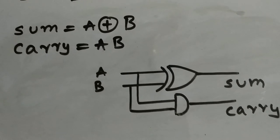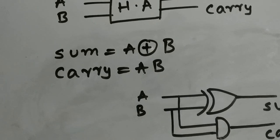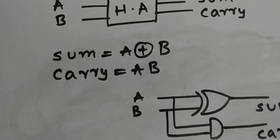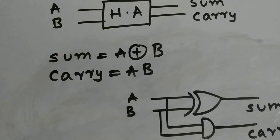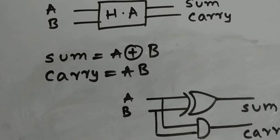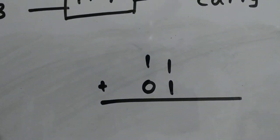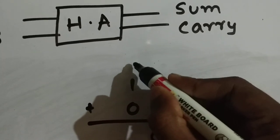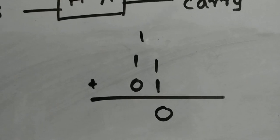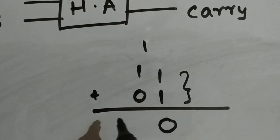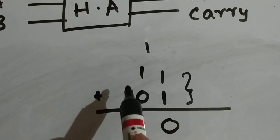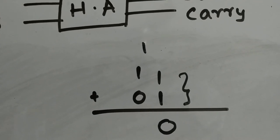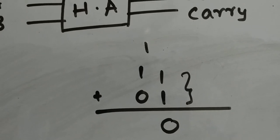Now you have the design of a half adder. I want you to answer one question: why is a half adder called a half adder? Consider a simple example — 1 plus 1 gives 0 with a 1 carried over. The problem with a half adder is that it can add only two bits at a time; it cannot add three bits.